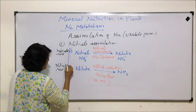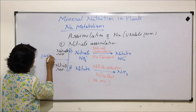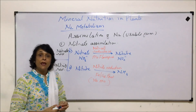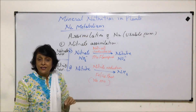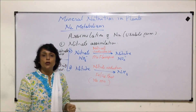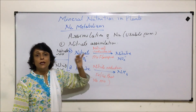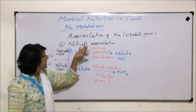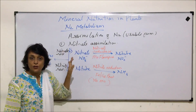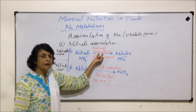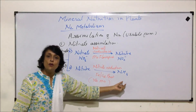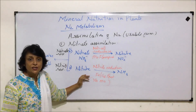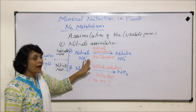Both these reactions take place at a faster pace in the presence of light. So for these two reactions, they are faster in light. Nitrate is reduced into nitrite with the help of an enzyme, and then nitrite is reduced into ammonia again with the help of reductase. These reactions are faster whenever light is available.